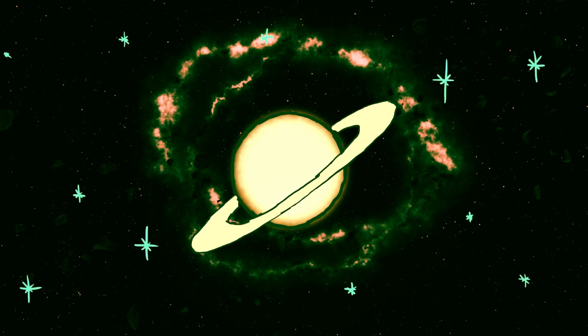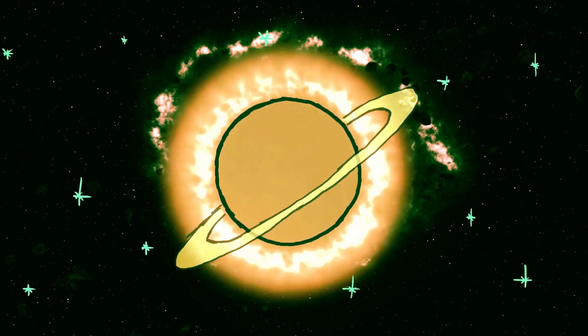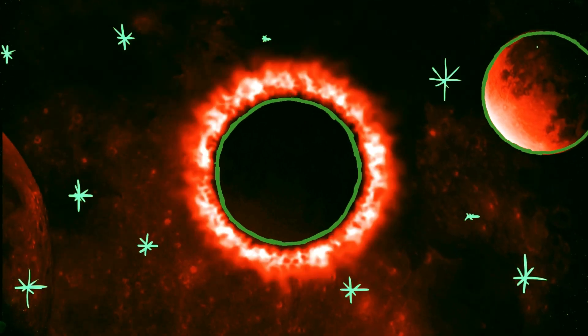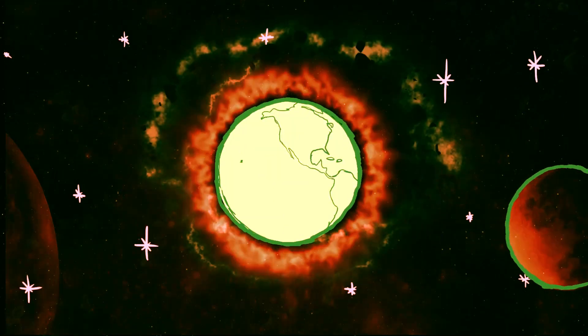Within this disk, small particles began to stick together through a process called accretion, eventually forming larger and larger objects, including planetesimals and protoplanets.